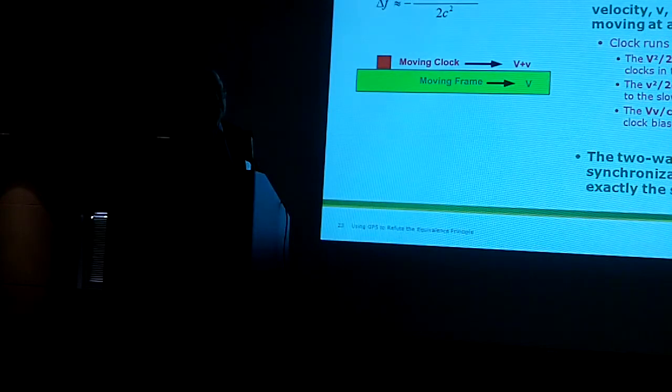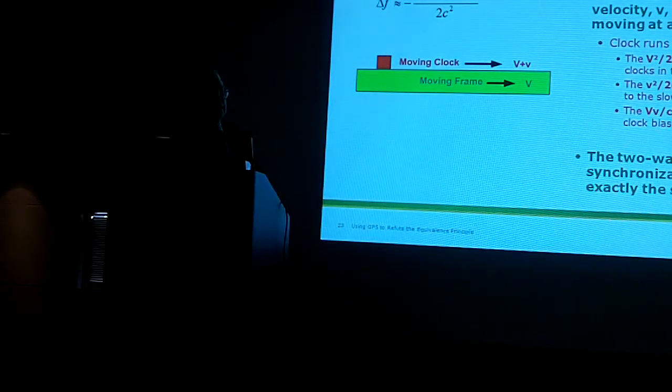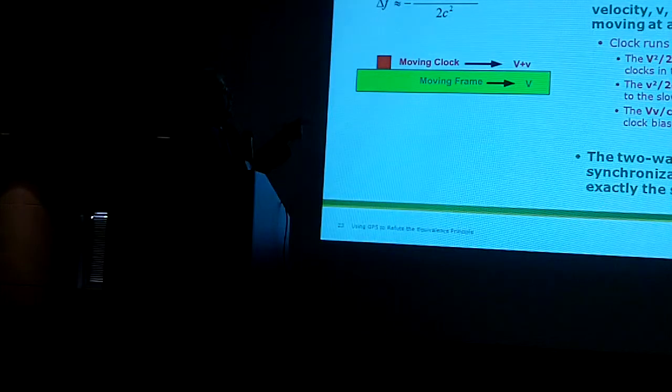And it turns out, in fact, in one of my early papers I showed this, that clock biases are naturally generated on Earth exactly like this, and this is what makes it look like the speed of light is C on the Earth.